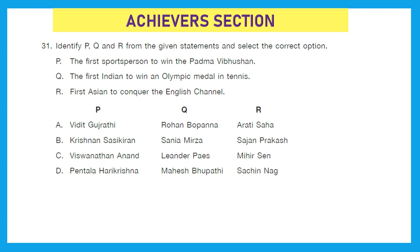Moving to our last section, the Achievers section, which holds double marks for each question. Question 31: Identify P, Q, and R from the given statements. P is the first sportsperson to win the Padma Vibhushan — that is Viswanathan Anand, who received the Padma Shri in 1988 and the Padma Vibhushan in 2007. Q is the first Indian to win an Olympic medal in tennis — that is Leander Paes. R is the first Asian to conquer the English Channel — that is Mihir Sen. The right answer is option C.